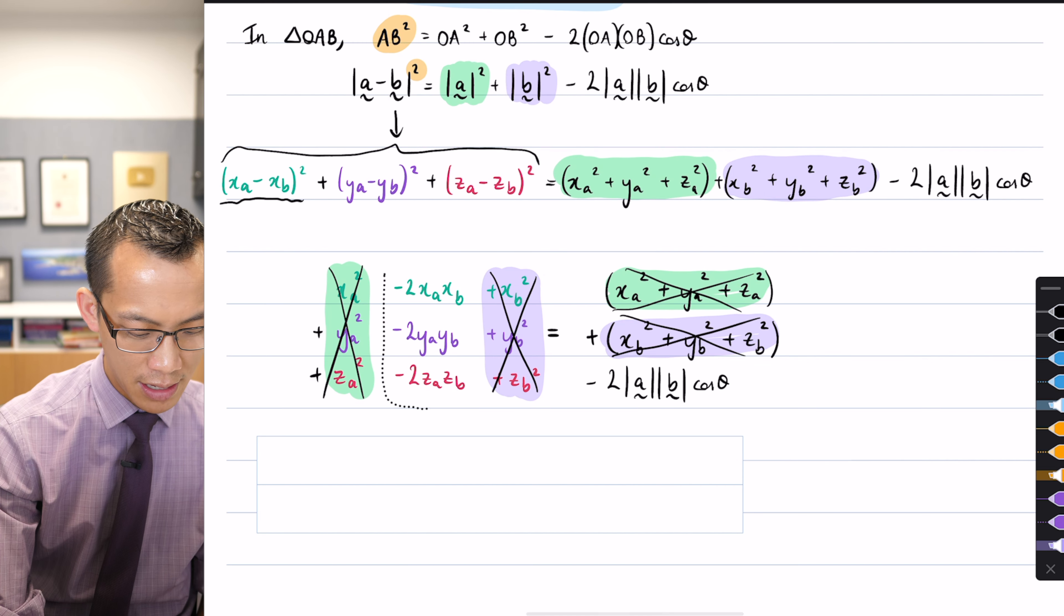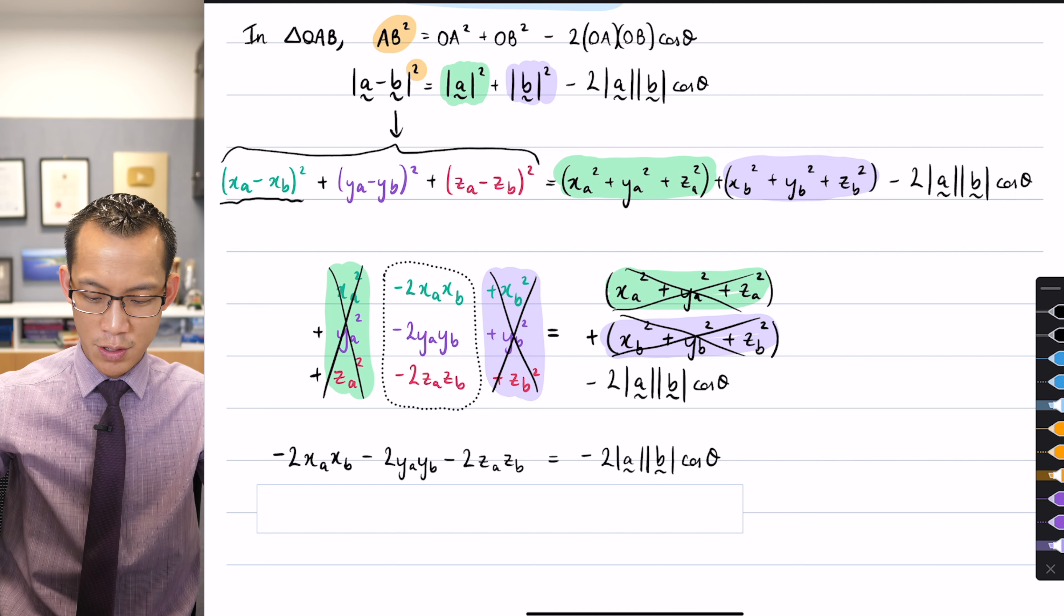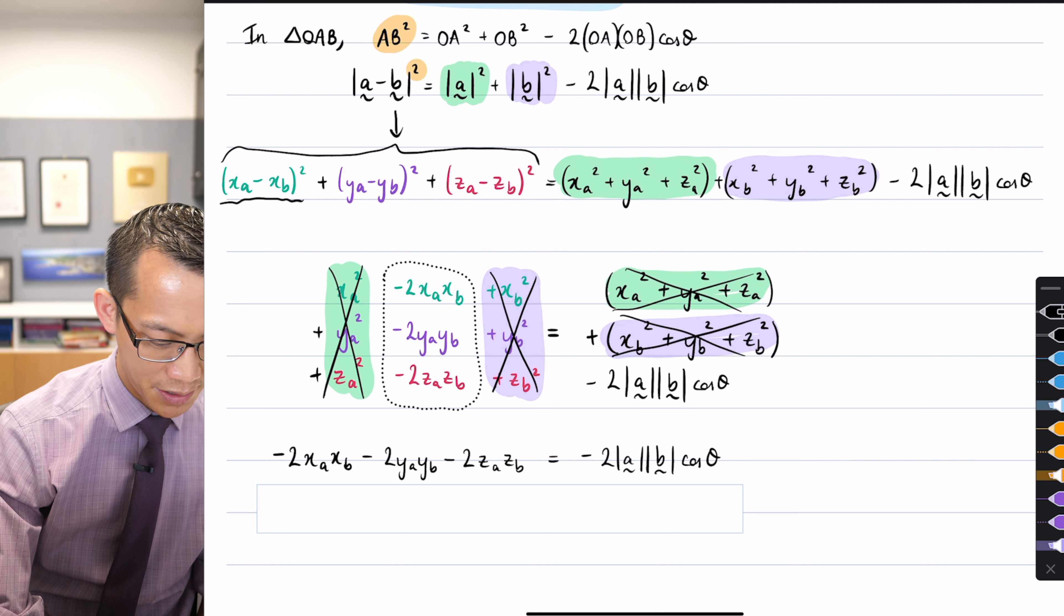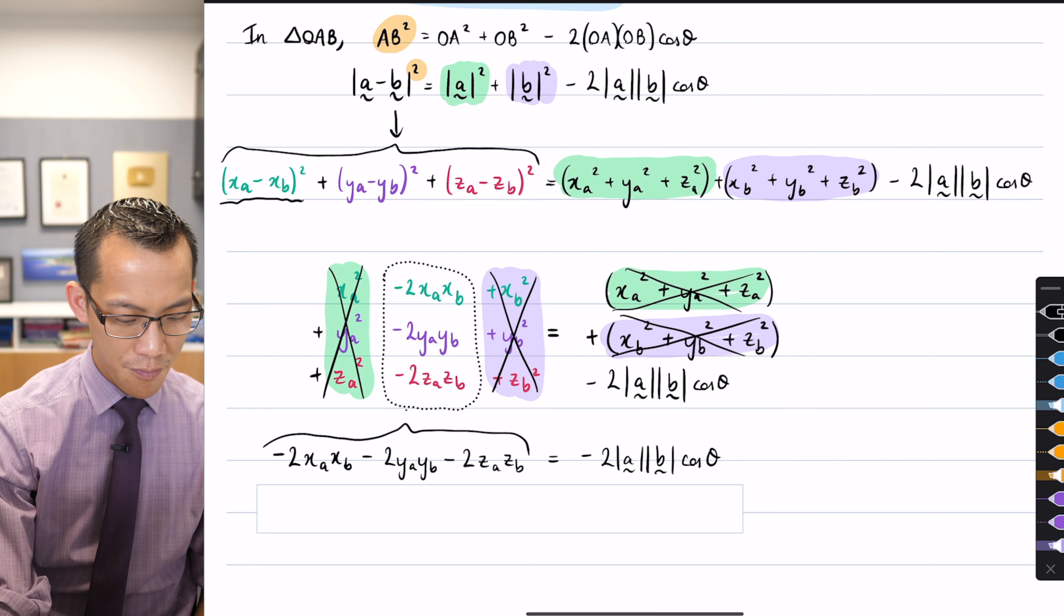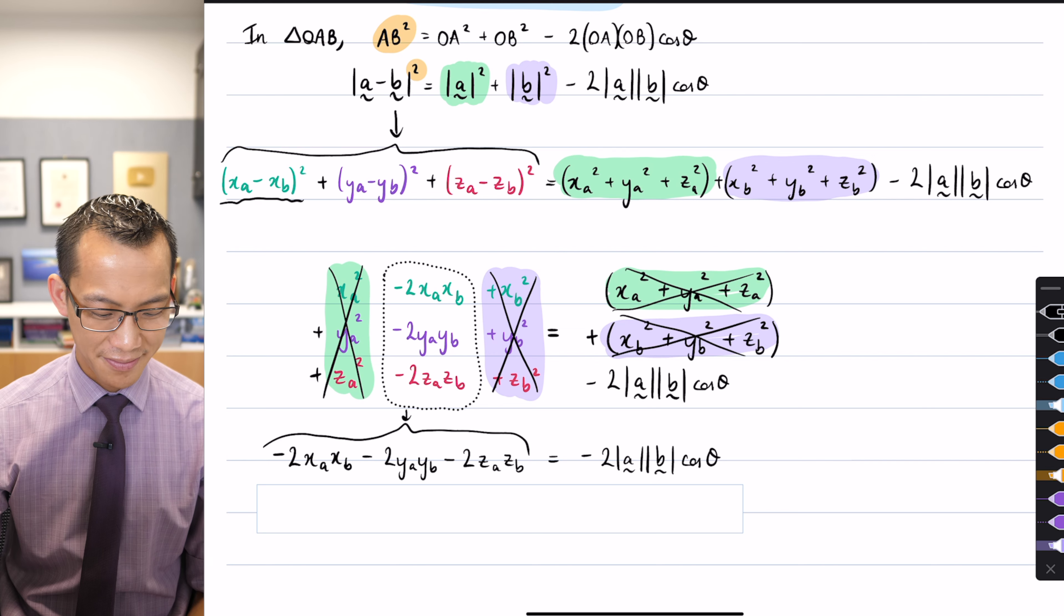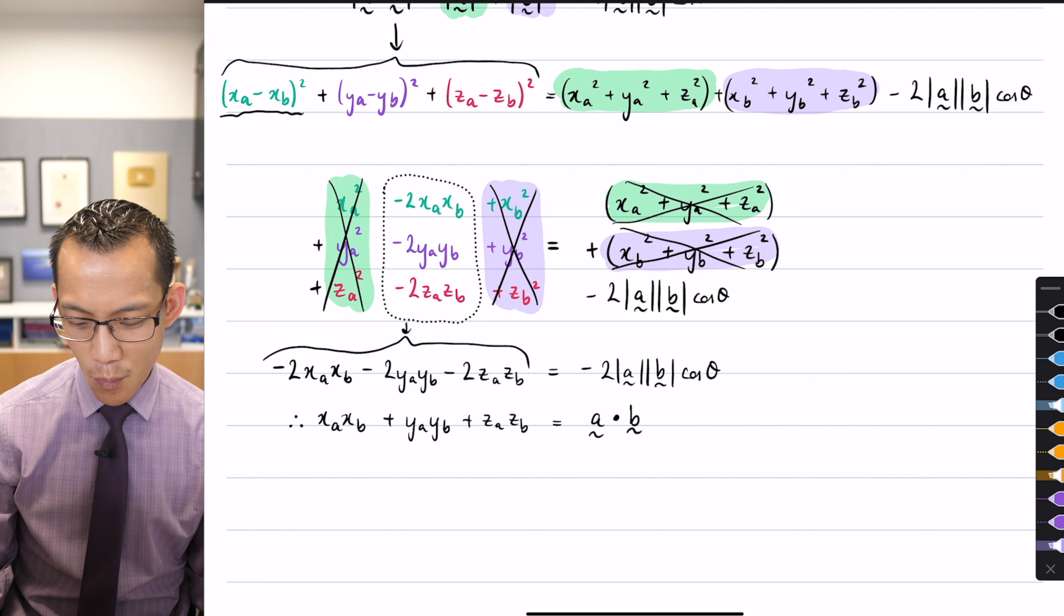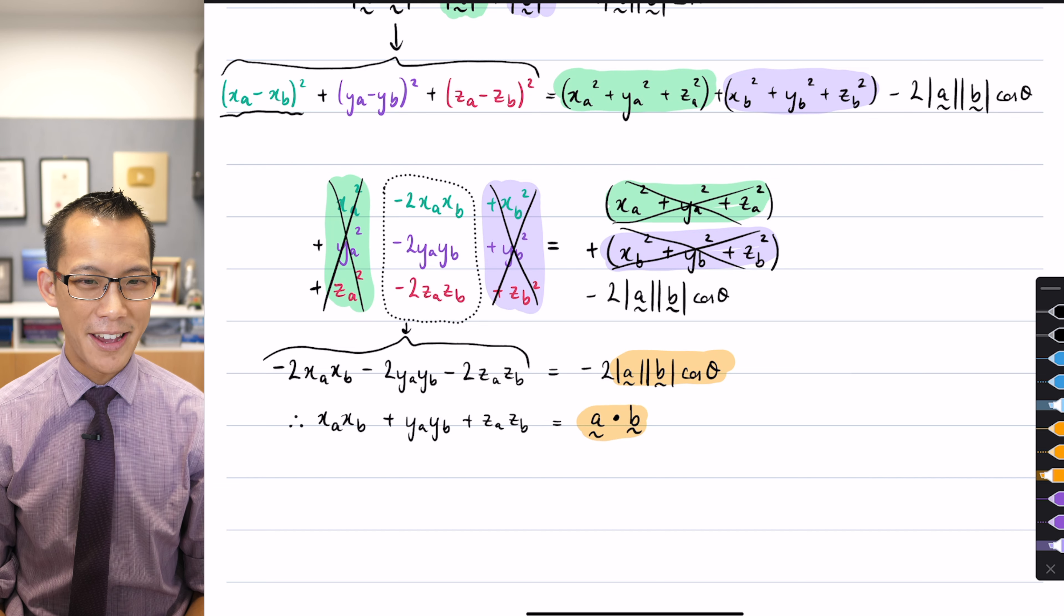So all we get left with is these minus two x's, minus two y's, and so on. We just get left with these terms in the middle. What can you now see, obviously, that I can divide through by on both sides? Negative two. That's a common factor of negative two. But once you notice, if you divide through by negative two on the right-hand side, you just end up with this, which is our definition of the dot product. So that's why I've just replaced it with that on the right-hand side.